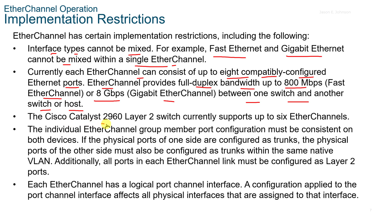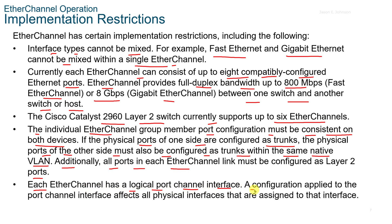The Cisco Catalyst 2960 Layer 2 switch currently supports up to six EtherChannels. Individual EtherChannel group member port configuration must be consistent on both devices. If the physical ports on one side are configured as trunks, the physical ports on the other side must also be configured as trunks within the same native VLAN. All ports in each EtherChannel link must be configured as Layer 2 ports. EtherChannel has a logical port channel interface — a configuration applied to the port channel interface affects all physical interfaces assigned to that interface.